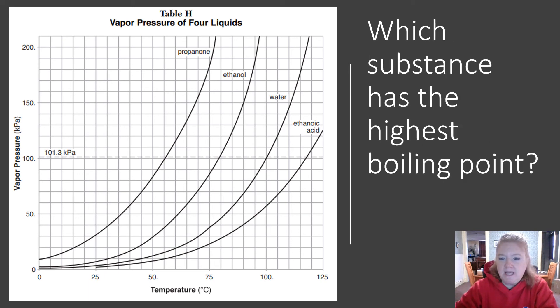Which substance has the highest boiling point? I go across on the normal boiling point line. Propanone is about 57, ethanol is about 78, water is 100, and ethanoic acid is about 117 or 118. So ethanoic acid has the highest boiling point, which means it has the highest intermolecular forces.